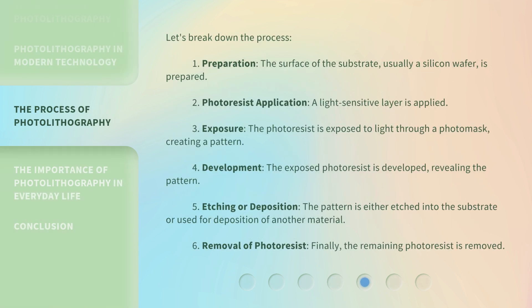Let's break down the process. Step 1: Preparation — the surface of the substrate, usually a silicon wafer, is prepared. Step 2: Photoresist application — a light-sensitive layer is applied. Step 3: Exposure — the photoresist is exposed to light through a photomask, creating a pattern.